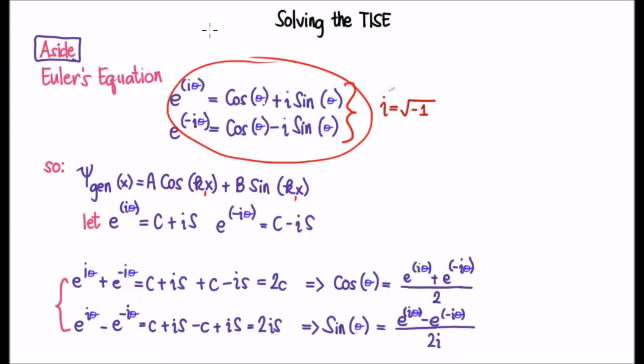Euler's equations are given on the top centre of your screen where e to the i theta is cosine theta plus i times the sine of theta and e to the minus i theta is cosine theta minus i times the sine of theta.